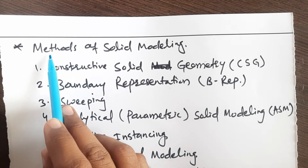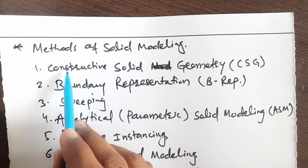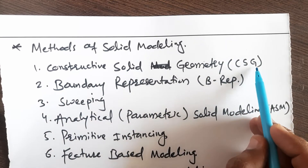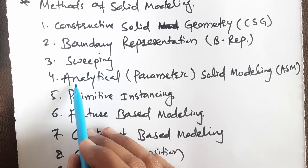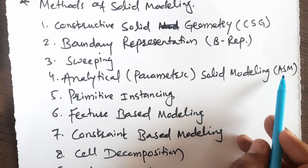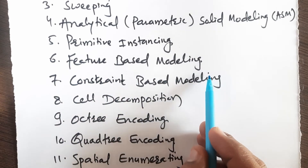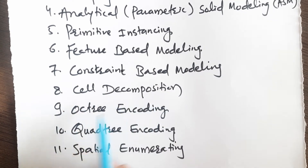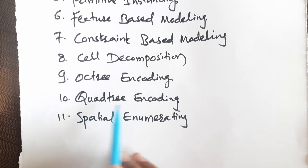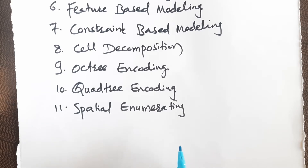We will see different methods for solid modeling. The methods are: Constructive Solid Geometry (CSG), Boundary Representation (BREP), Sweeping, Analytical or Parametric Solid Modeling (ASM), Primitive Instancing, Feature-Based Modeling, Constraint-Based Modeling, Cell Decomposition, Octree Encoding, Quad Tree Encoding, and Spatial Enumeration. These are the methods for solid modeling, and we will go into detail about all of them one by one.